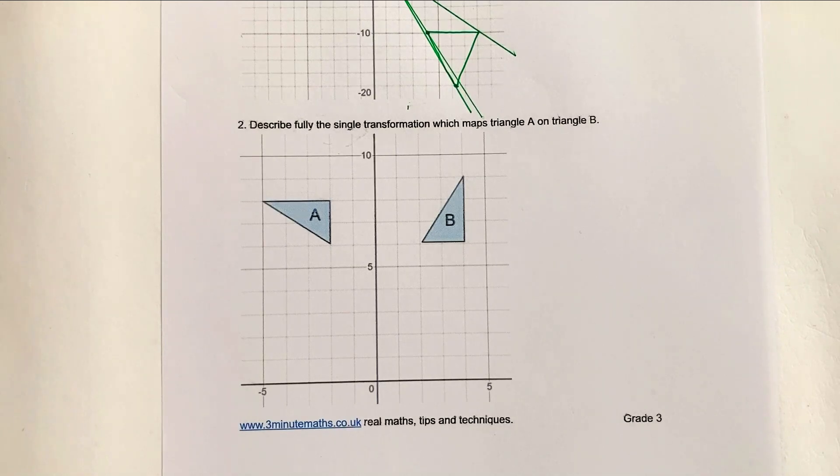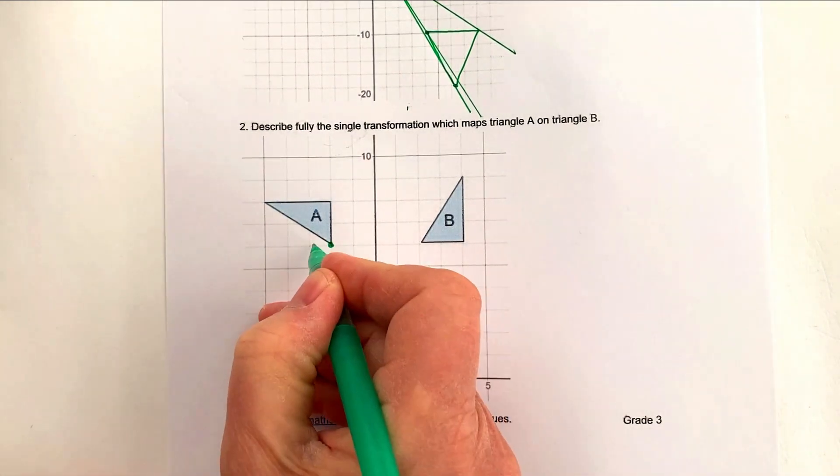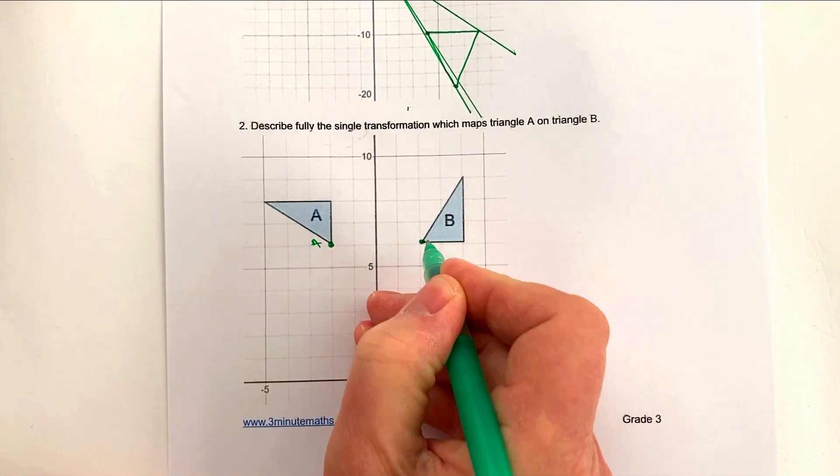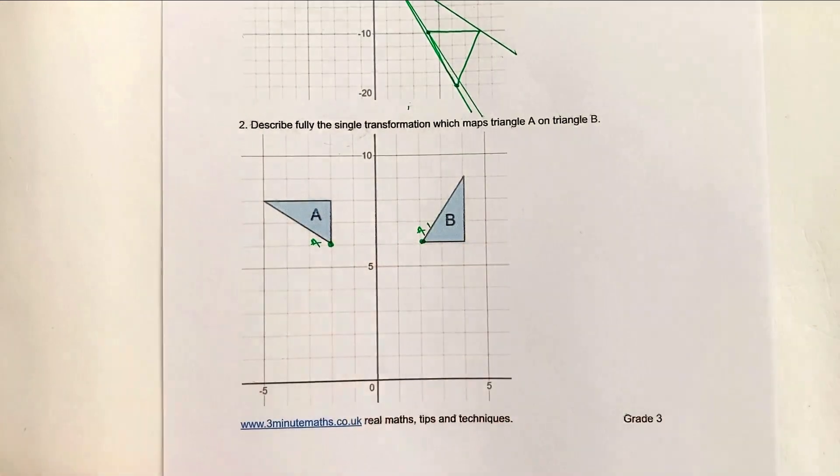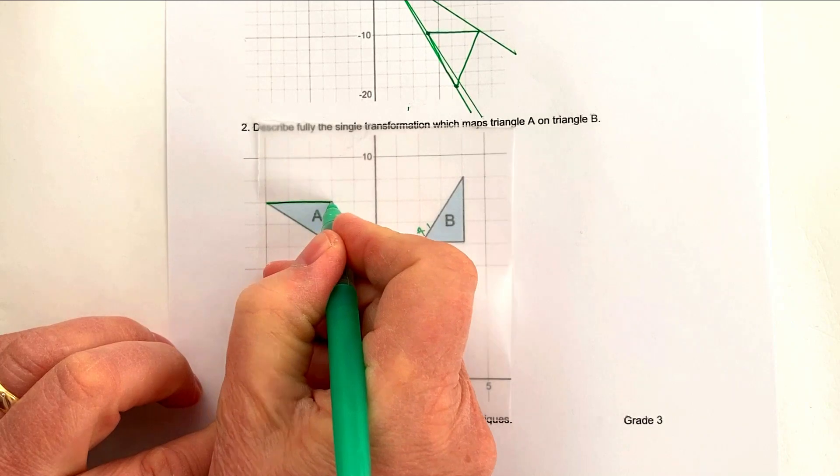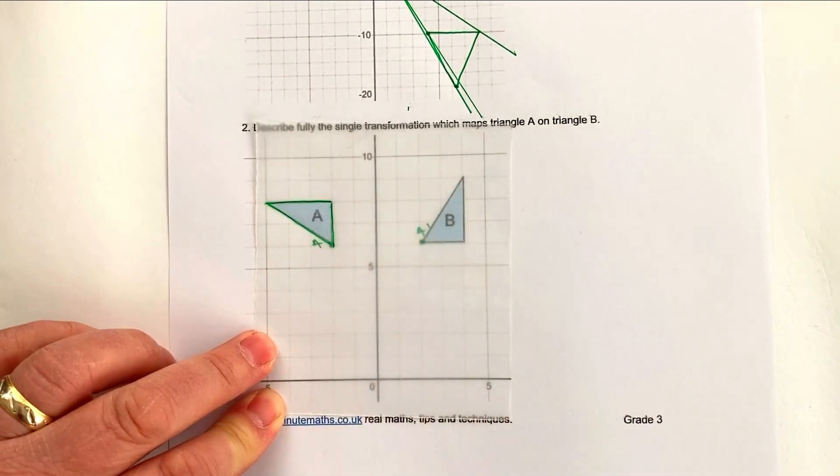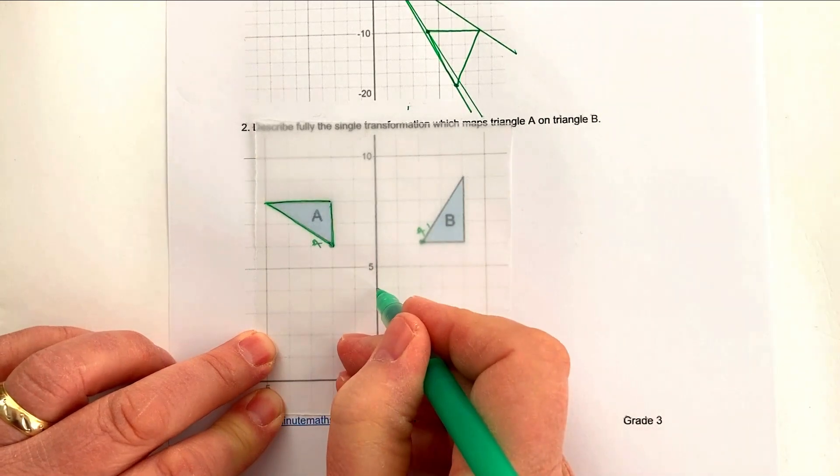What we need to figure out really is how many degrees it's gone around and at what point it's rotated from. So if I look at this point here, which is A, I'm going to go to this point here, which is A prime. So what I'm going to do is, again, use my tracing paper and draw my triangle like that. And then really, it's just a bit of trial and error.